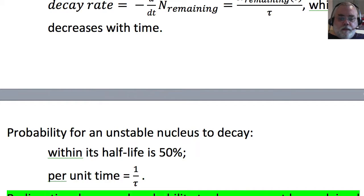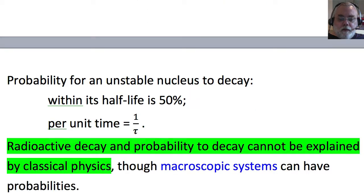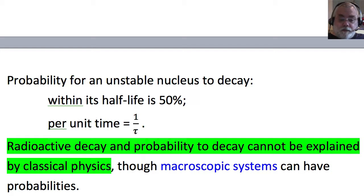This can be expressed in terms of probability. The probability for an unstable nucleus to decay within its half-life is 50% on average, and the probability to decay per unit time is 1 over tau. But radioactive decay and probability to decay cannot be explained by classical physics.